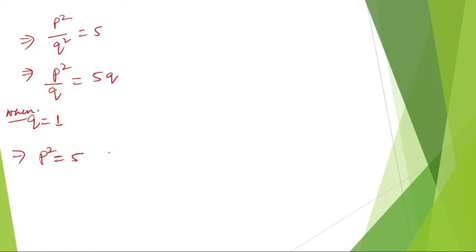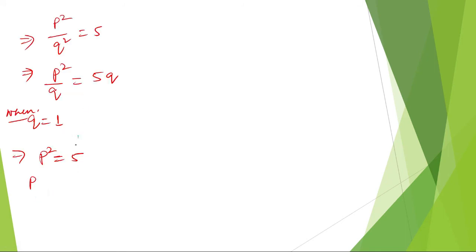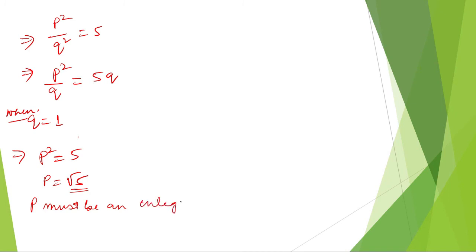And by the condition, P must be a rational number. Since P square is equal to 5, P is equal to root 5. So P must be an integer, but P is equal to root 5, which is not an integer. Root 5 is not an integer.